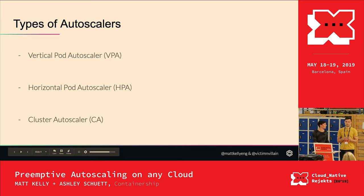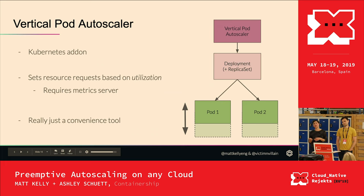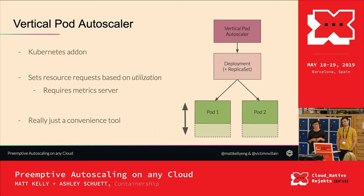There are different types of autoscalers: the vertical pod autoscaler, the horizontal pod autoscaler, and the cluster autoscaler. The vertical pod autoscaler looks at what resources are actually being used on a pod — you deploy it on your Kubernetes cluster alongside a metric server. It looks at actual utilization and either gives you recommendations for resource requests or updates them automatically, depending on which mode you're running the VPA in.